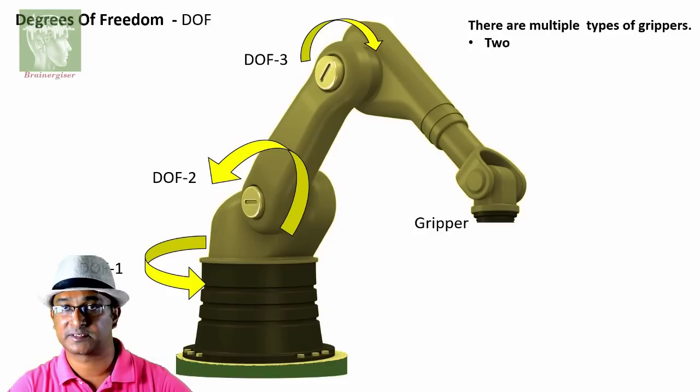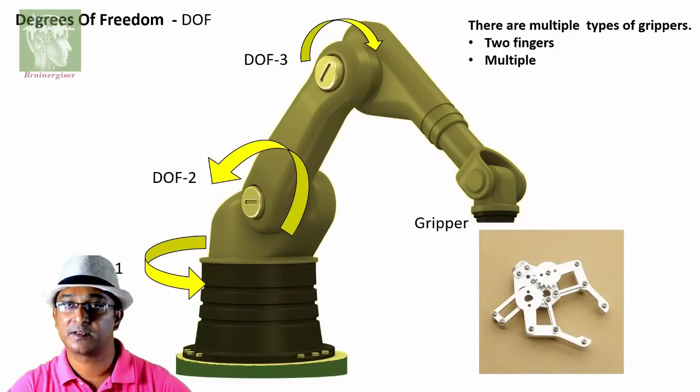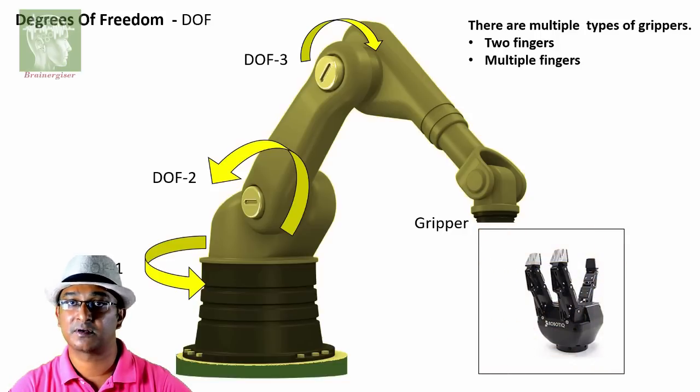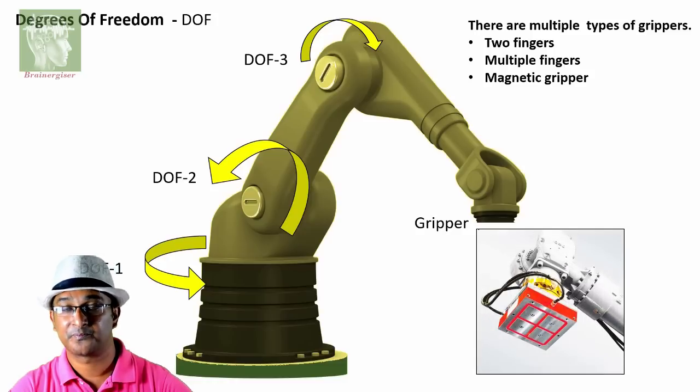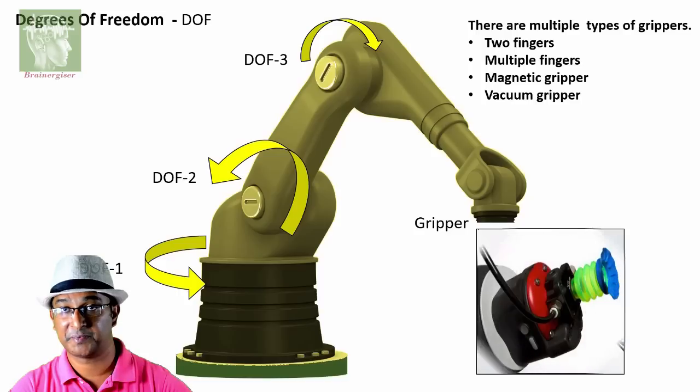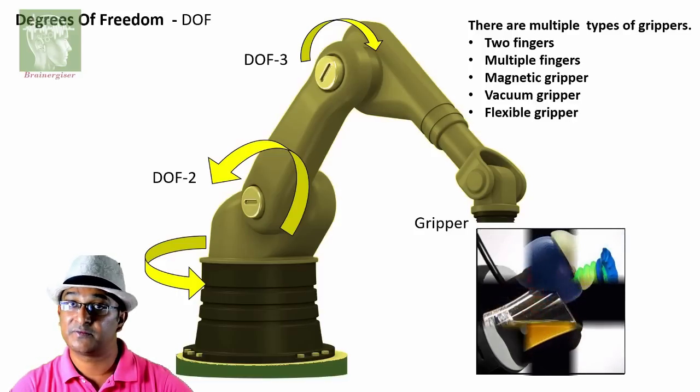So there are many types of grippers: two-finger gripper, three-finger gripper, magnetic gripper, vacuum gripper to pick and place, or universal pickup which can grip anything.